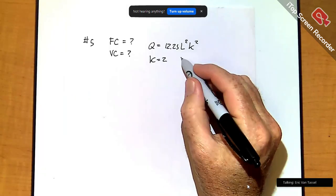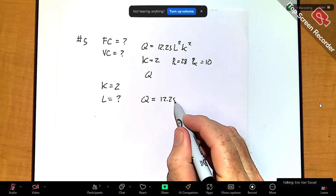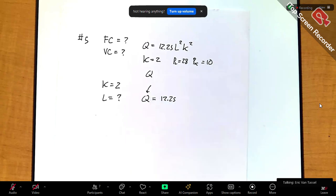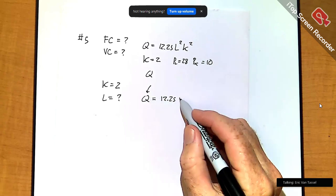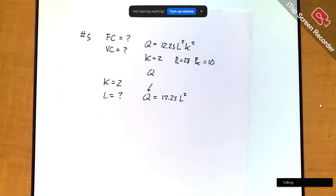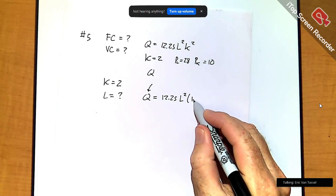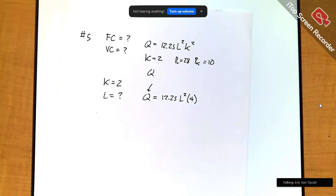Price of L is 28, Q equals 12.25, here's my target. Times L squared times K squared, but K is 2, so I'll plug the 2 in, and that'll give me 4 when I square it, something like that, and then 4 times 12.25, 49 it is,